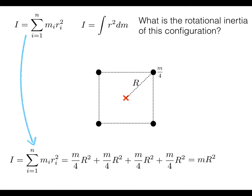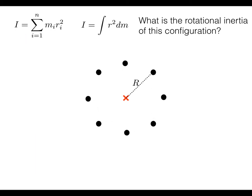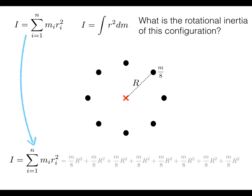It's an interesting result, and it gets more interesting. If you take those M/4 pieces and break each in half, distributing them so that each of the eight masses M/8 is still at distance R from the axis of rotation, the summation again gives eight terms of (M/8)R², which adds up to MR² — the exact same result as before.